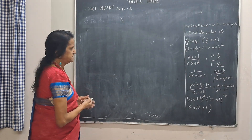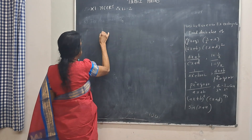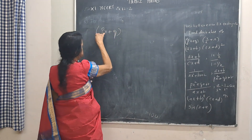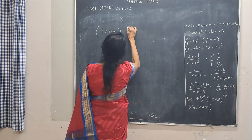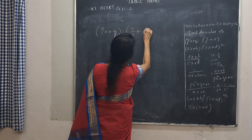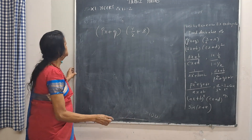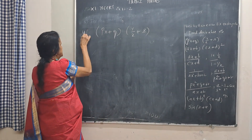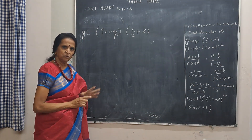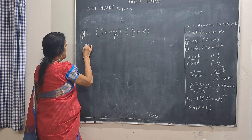Find the derivative. This is a miscellaneous question. P and Q are all constants. You are going to use the product rule. Even without putting y you can do it — directly if you want.